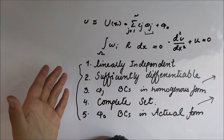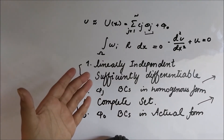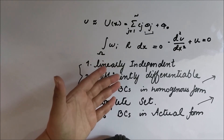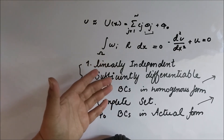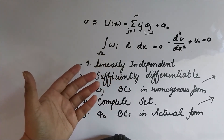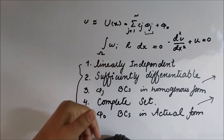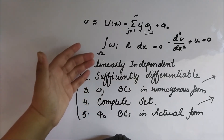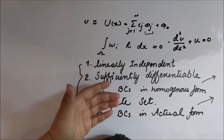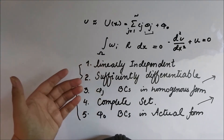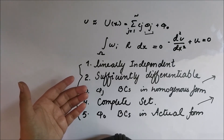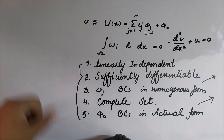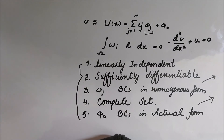In the next video we will talk about the first method used in the strong form and solve an example related to it, so we can understand the concept and the difference between the weight and shape functions in the weighted residual method. Thank you for watching — please subscribe to the channel for more upcoming videos. We will meet in the next video. Take care, goodbye.